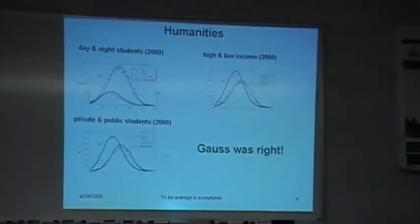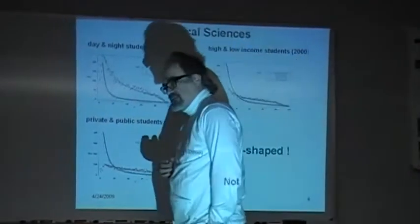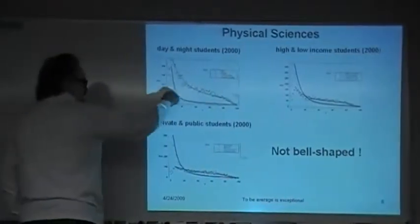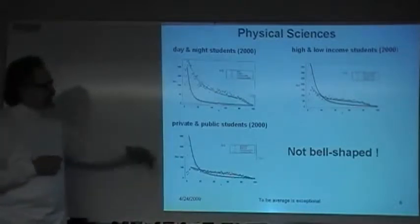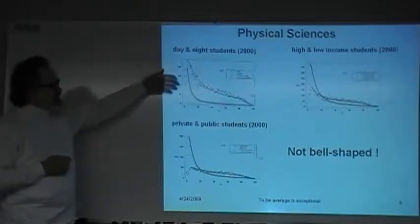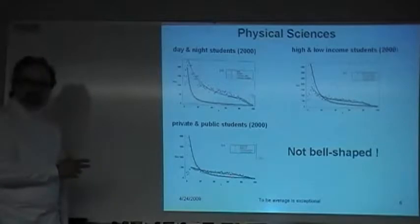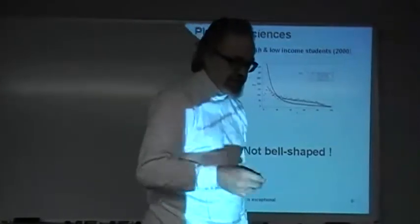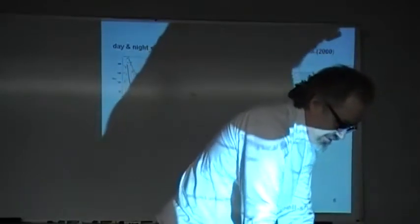Let's look at physics. Same set of students, different disciplines. There's nothing normal or Gaussian about this distribution. It's a distribution that has a long tail. Again, the separation of day and night students. High and low incomes, public school, private school. It's certainly not bell-shaped. So, there's something different about physics. Well, what's the sample size right now? There's 60,000 students. Still 60,000?